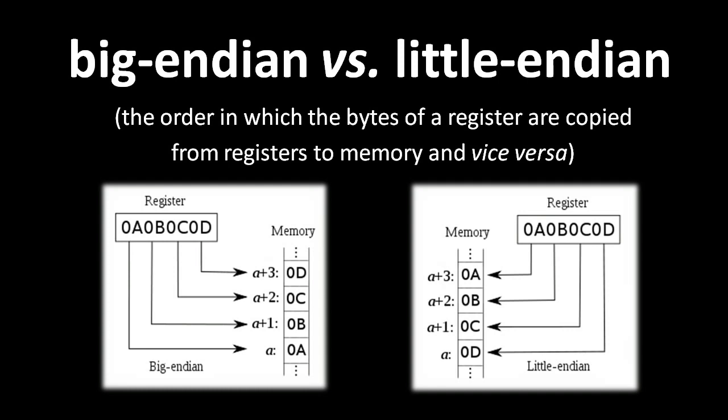You're probably familiar with the Jonathan Swift book Gulliver's Travels. A part not depicted in the cartoon is that in the land of Lilliput, the big Endians are at war with the little Endians over whether to crack eggs from the big end or from the little end — the joke being that the choice is totally arbitrary. CPU designers have a similarly arbitrary choice to make concerning how the bytes in a register get copied to and from memory. Say we have a 32-bit register with the bytes 0x0a0b0c0d.